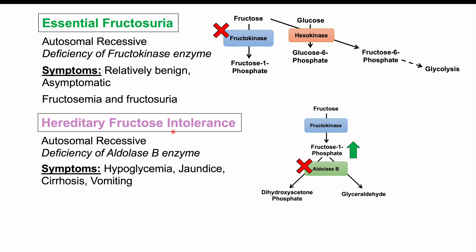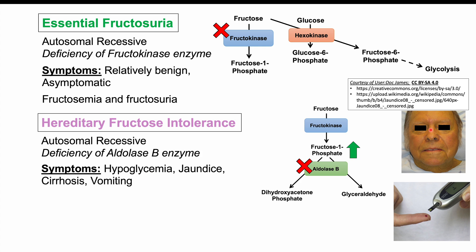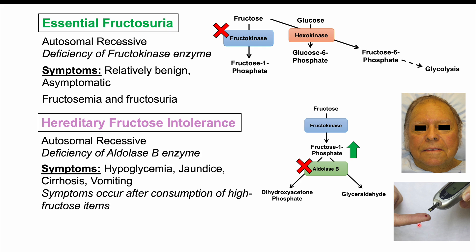Symptoms of hereditary fructose intolerance include hypoglycemia (low blood glucose), jaundice, cirrhosis, and vomiting. It can lead to liver damage, with high bilirubin causing yellowing of the skin and whites of the eyes. Because we cannot utilize fructose for energy, we draw on more glucose from the blood, leading to low blood glucose levels. These symptoms are triggered after consumption of high-fructose items such as honey, juice, or soda.